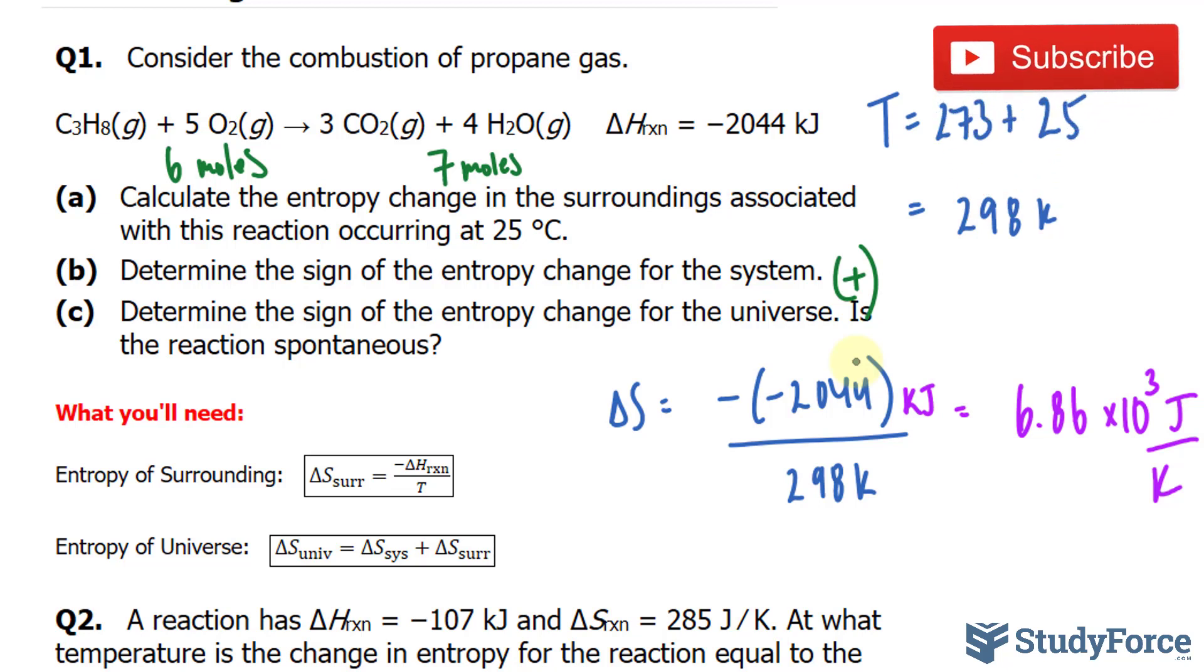In question C, determine the sign of the entropy change for the universe. Is the reaction spontaneous? We'll use the formula underneath here. We know that this number, as discussed in part B, is going to be positive. And this one, from what we found here, is positive. Adding two positive numbers makes a positive output. Therefore, the reaction is spontaneous.